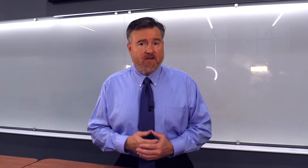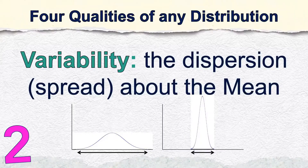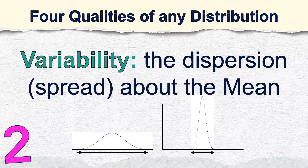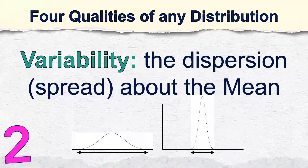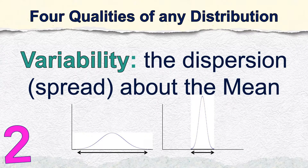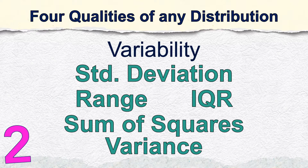The second question we have about our distribution is: how spread out are the scores? Are they all close together, packed tightly near the mean? Or are they spread out broadly, with lots of high scores and low scores and much variability in between? Typically we are going to answer questions about variability using the standard deviation, but other measures of variability include the range, the interquartile range, the sum of squares, or the variance of the distribution.